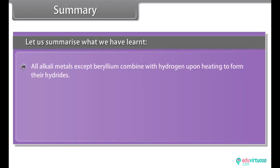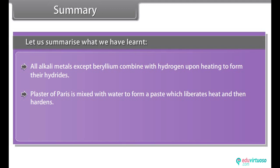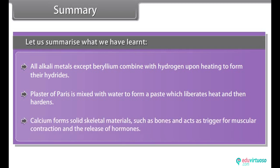The alkaline earth metals have two electrons in the s-orbital of the valence shell and are predominantly ionic. All alkaline earth metals except beryllium combine with hydrogen upon heating to form their hydrides. Plaster of Paris is mixed with water to form a paste which liberates heat and then hardens. Calcium forms solid skeletal material such as bones and acts as trigger for muscular contraction and the release of hormones.